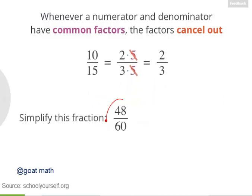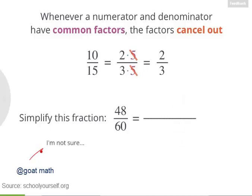Cancelling out all these common factors is often called simplifying a fraction. So next, try simplifying this fraction, 48 sixtieths. Cancel out as many common factors as you can and then enter your numerator up here and your denominator down here, or click here if you get stuck.